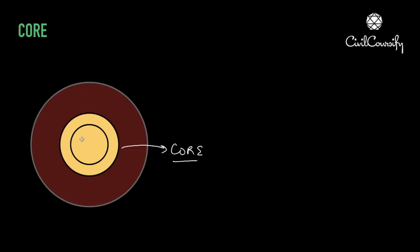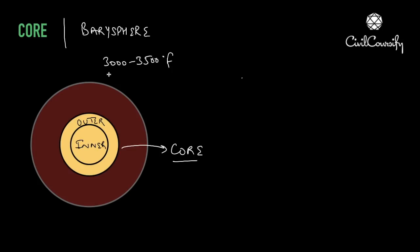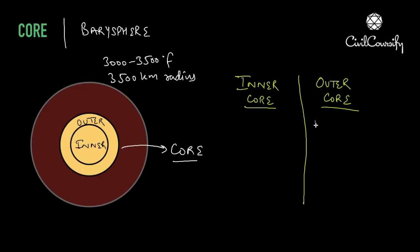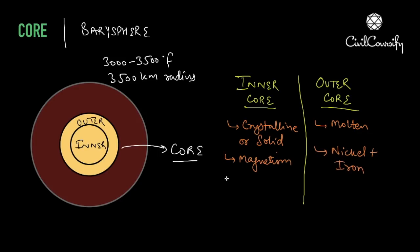Now we need to look at the core. The core has two layers: the outer core and the inner core, and together the core is known as the barysphere. The core's temperature is roughly 3000 to 3500 degrees Fahrenheit, and its radius is around 3500 kilometers. The outer core is molten, whereas the inner core is crystalline or solid. The reason the inner core is solid despite being hotter is because of the extremely high pressure. The outer core has nickel and iron, whereas the inner core is made up of iron. The inner core also has a magnetic field, which is very important for the survival of our earth.